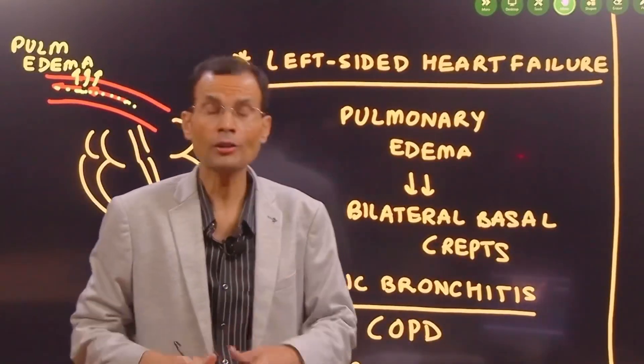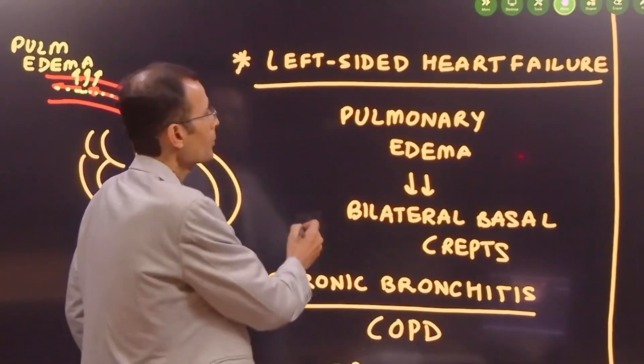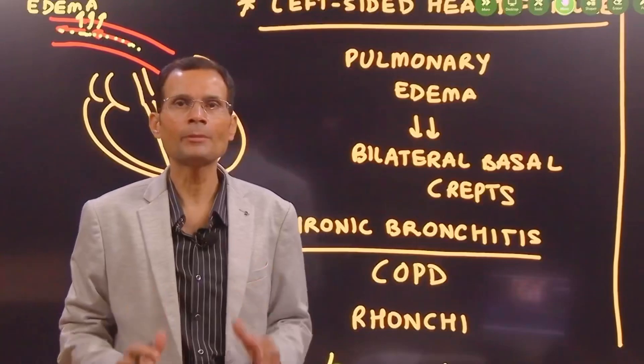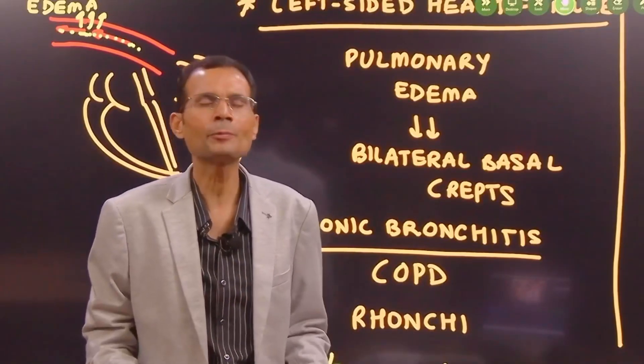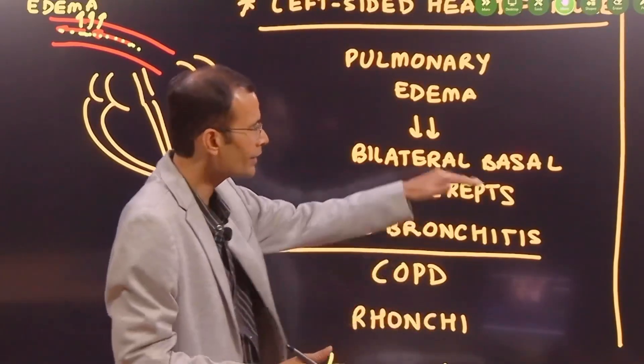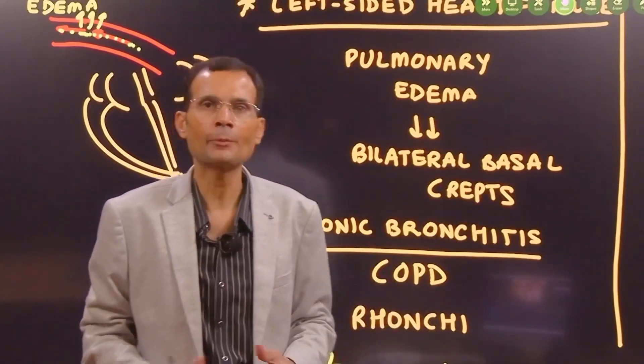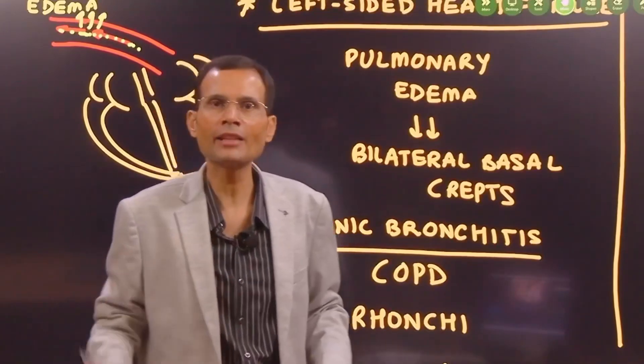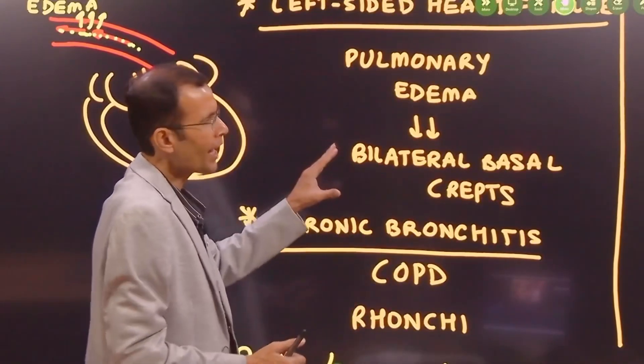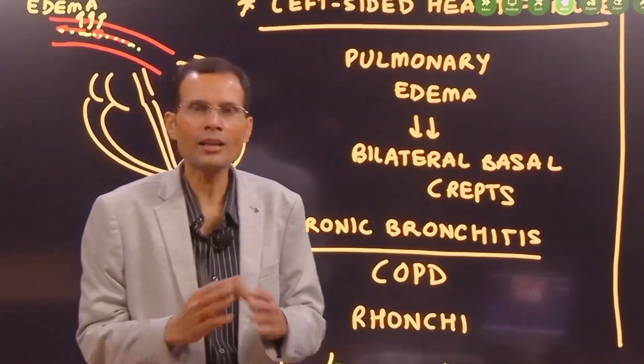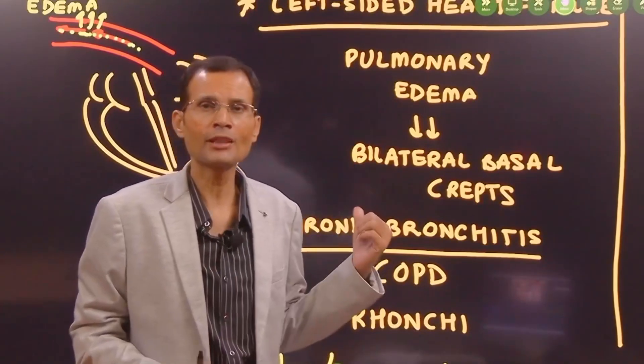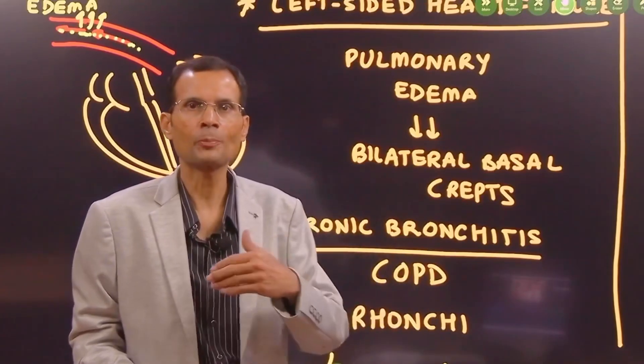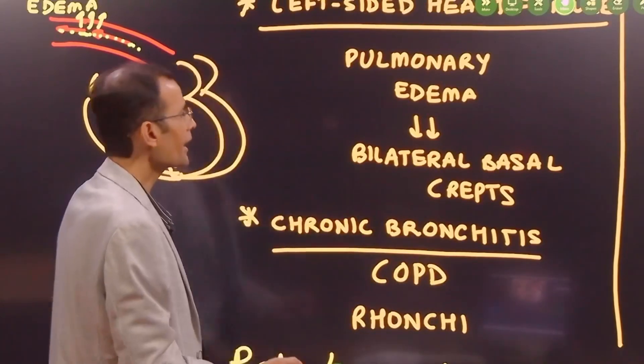But in the case of pulmonary edema, there would be bilateral creps and generally speaking basal creps in the basal region - one would find the creps, which is not the case here. They have mentioned only creps on the right side. Apart from that, vitals are unremarkable. If it was left-sided heart failure, then there would be some indication in pulse rate or blood pressure, which is not the case. So we can safely rule this out.